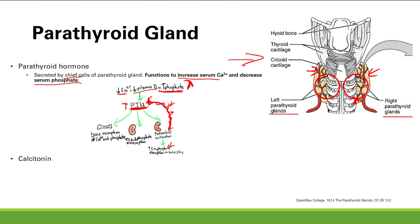Now let's talk about calcitonin. Calcitonin is made in the thyroid, not in the parathyroid, but it's included here because it has pretty much the opposite function of parathyroid hormone. It's secreted by parafollicular C cells of the thyroid — something to know because you'll see that in thyroid cancer later.